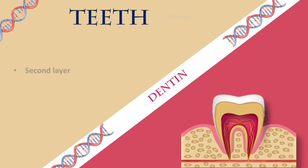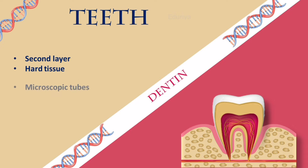The second layer underlying the enamel is dentin. It is a hard tissue that contains microscopic tubes. When the enamel is damaged, heat or cold can enter through these tubes and can cause sensitivity or pain.